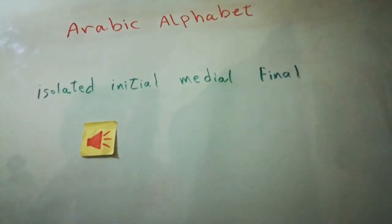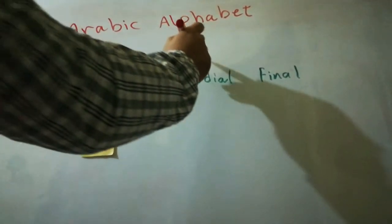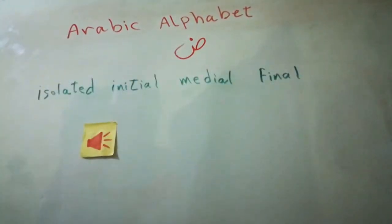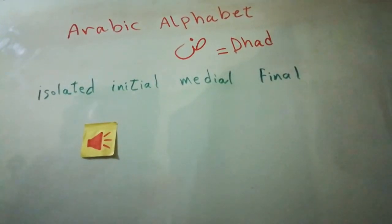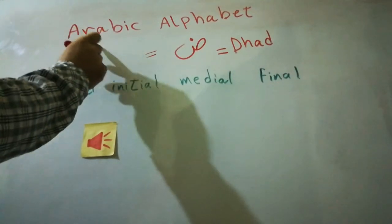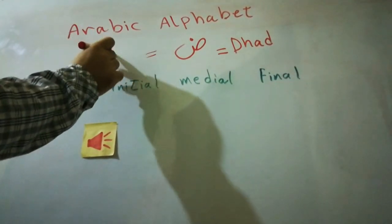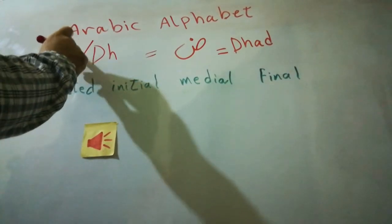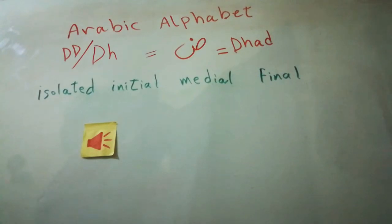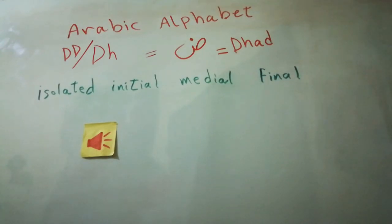Welcome back guys! We're going to take the letter DOD. Its equivalent in English is the D, or people might refer to it as DH, which means like a double D — let's say it's a strong D. It's called DOD. Why this letter is so important is because this is the letter that identifies or refers to the Arabic language.